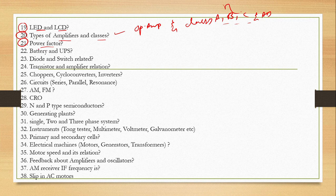Power factor. Battery and UPS. What is a diode? How many types of diodes are there? How many types of switches are there? Transistor — transistor and amplifier relation, transistor and amplifier, diode and switch.